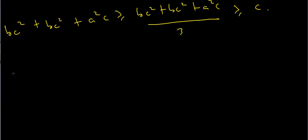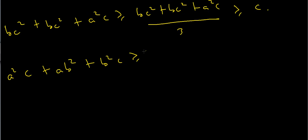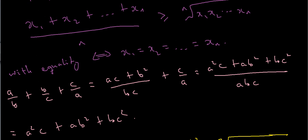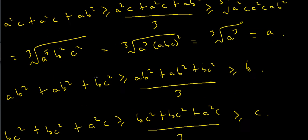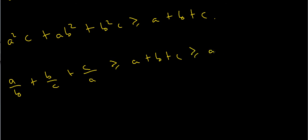When I add the right-hand sides of these inequalities — which were just A, B, and C — I'm left with A plus B plus C. Now remember that the left-hand side was just the sum of the fractions I started with: A over B plus B over C plus C over A. So what I can conclude is that A over B plus B over C plus C over A is greater than or equal to A plus B plus C. And since A, B, and C are all positive real numbers, none of them zero, this is obviously greater than or equal to A plus B plus C divided by 3. And we're done.